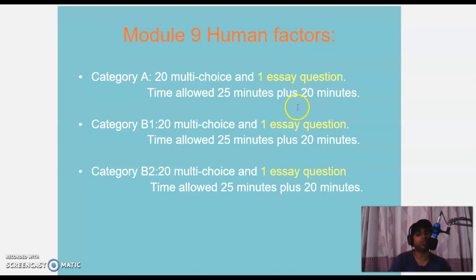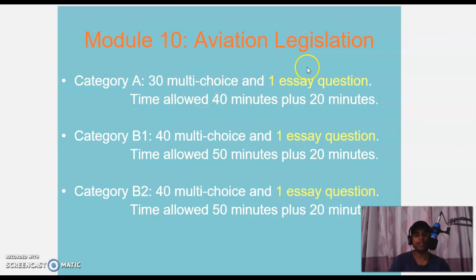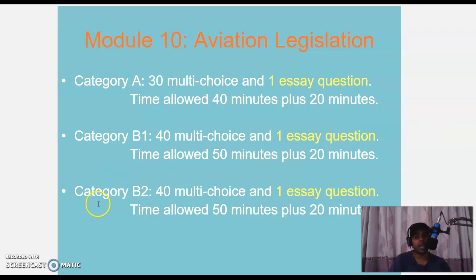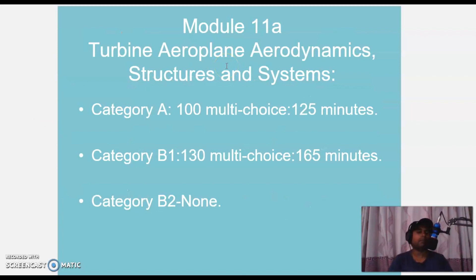Module 9 continued — Category B1: 20 MCQs and one essay question, 25 minutes for MCQs and 20 minutes for the essay. Category B2: same as Category A, 20 MCQs, 25 minutes, and 20 minutes for one essay. Module 10 Aviation Legislation: Category A 30 MCQs and one essay, 40 minutes for MCQs and 20 minutes for essay. Category B1: 40 MCQs and one essay, 50 minutes for MCQs and 20 minutes for essay. Category B2: same as B1.